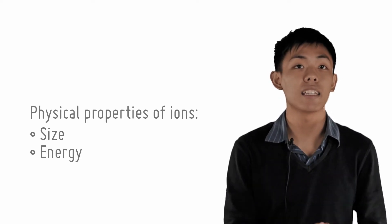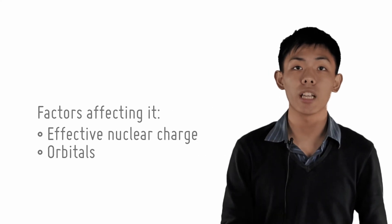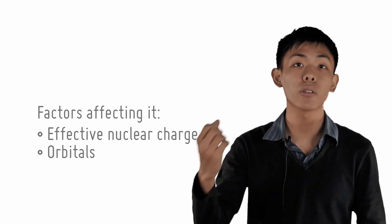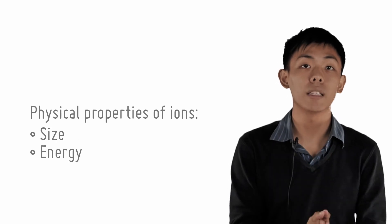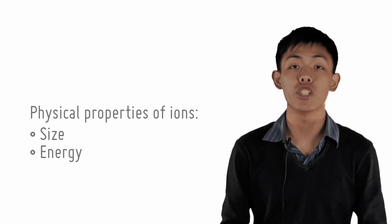Once again, where energy and size is concerned, the same two properties come into play. Effective nuclear charge tells us how strongly attracted the outer electrons are, while the orbitals give us an indication of the energy levels.